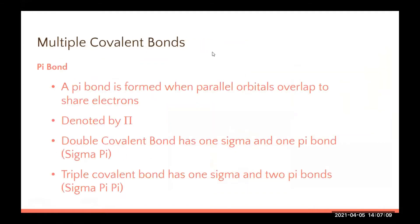Now let's talk about multiple covalent bonds and pi bonds. A pi bond is added onto a sigma bond and signifies parallel orbitals. You always start with a sigma bond, then add one or two pi bonds to create a double or triple bond. Remember: sigma = one word, one bond; sigma + pi = two words, two bonds (double bond); sigma + pi + pi = three words, three bonds (triple bond).